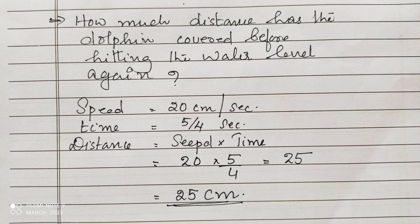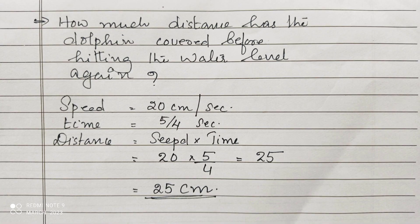Last part is, how much distance has the dolphin covered before hitting the water level again? For finding the distance, we know that distance = speed × time. In the question it is given, speed = 20 centimeters per second.